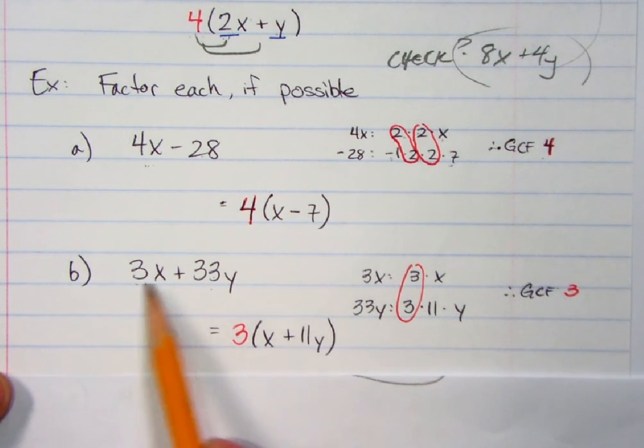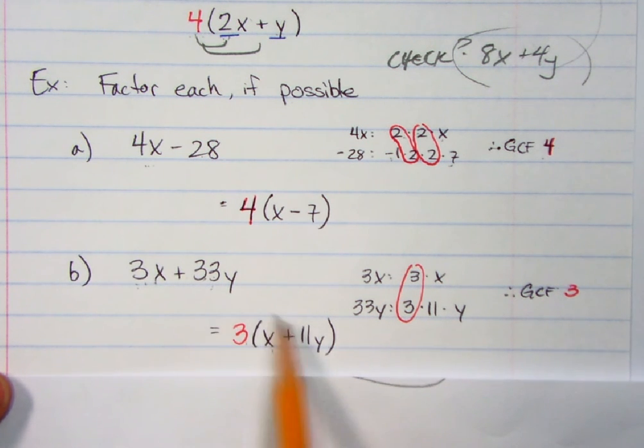Okay, what do they have in common? They have a 3 in common. What's left? X and 11y. Okay, you can take a look at that.